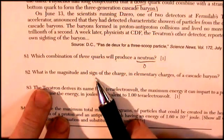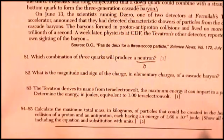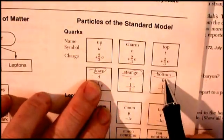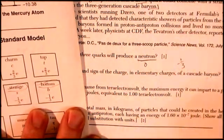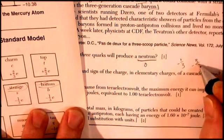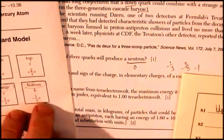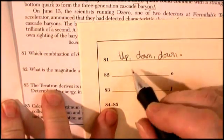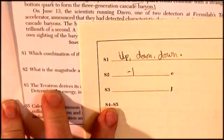What is the magnitude and sign of the charge in elementary charges of a cascade baryon? Well, that's a good thing we wrote all these down. The cascade baryon is a down, a strange, and a bottom. So let's see, I've got a minus a third, minus a third, minus a third, and minus a third for a total charge of minus three thirds, or minus one. This cascade baryon is going to have a charge and magnitude of minus one elementary charge, or minus one. And there it goes.